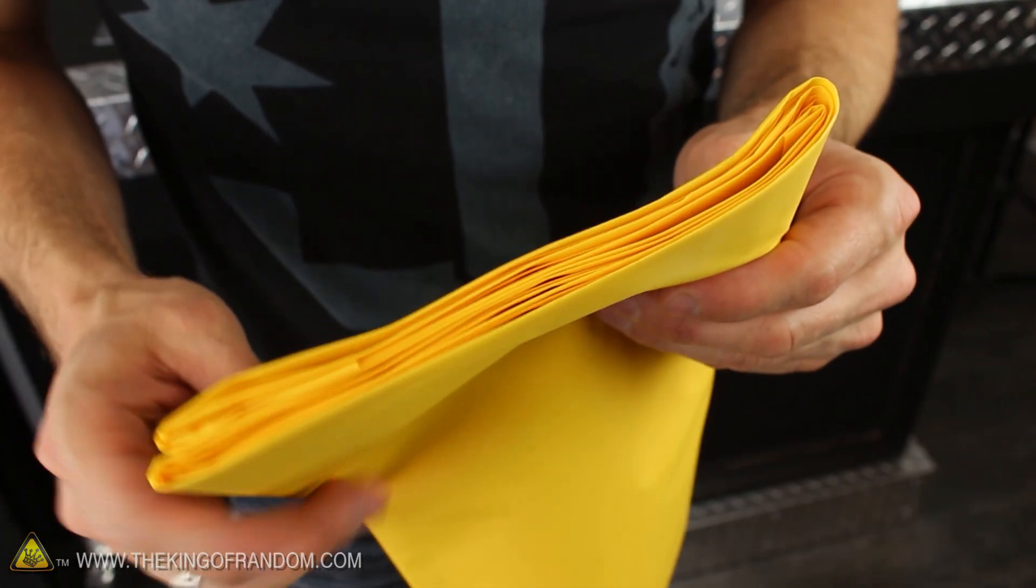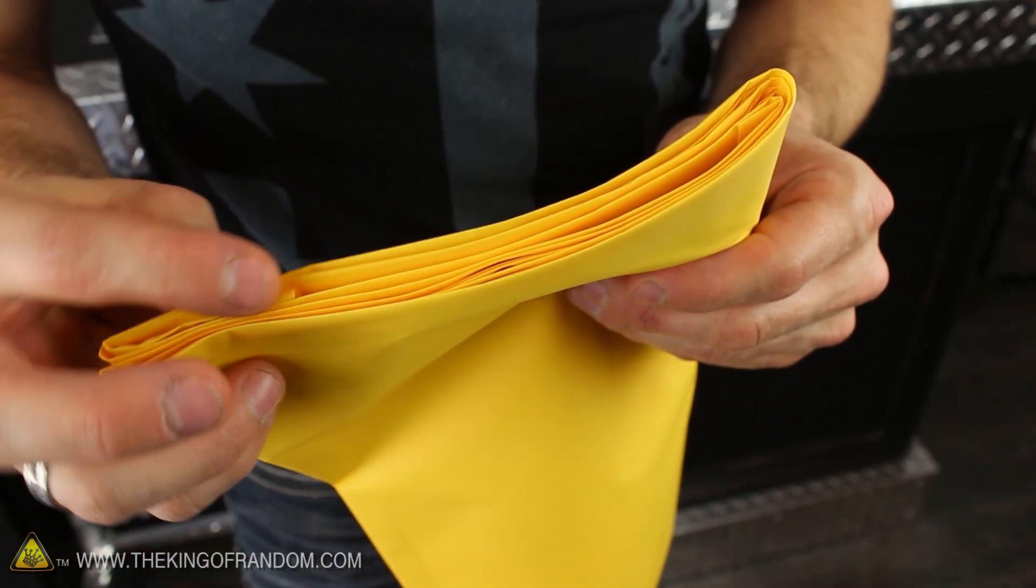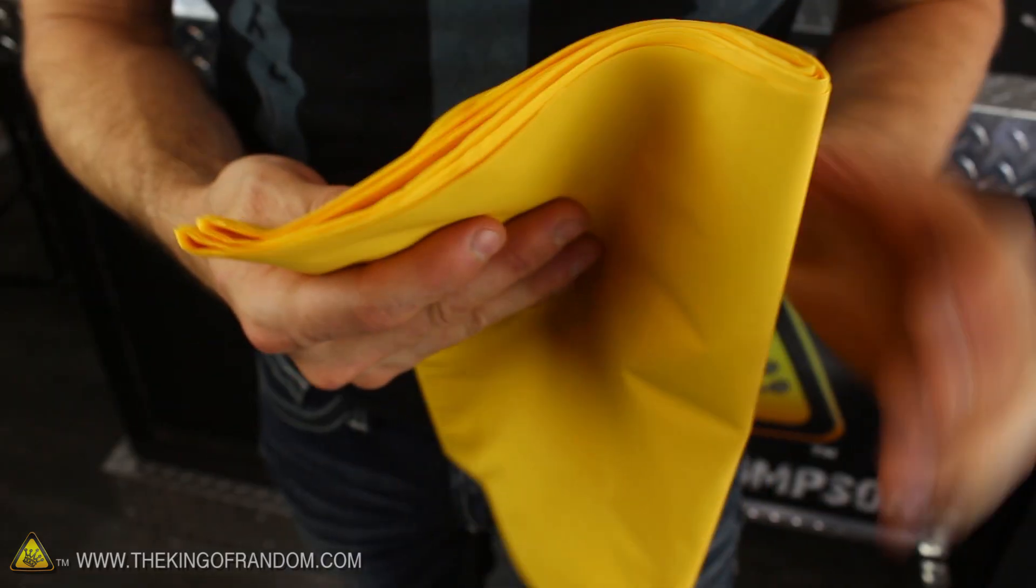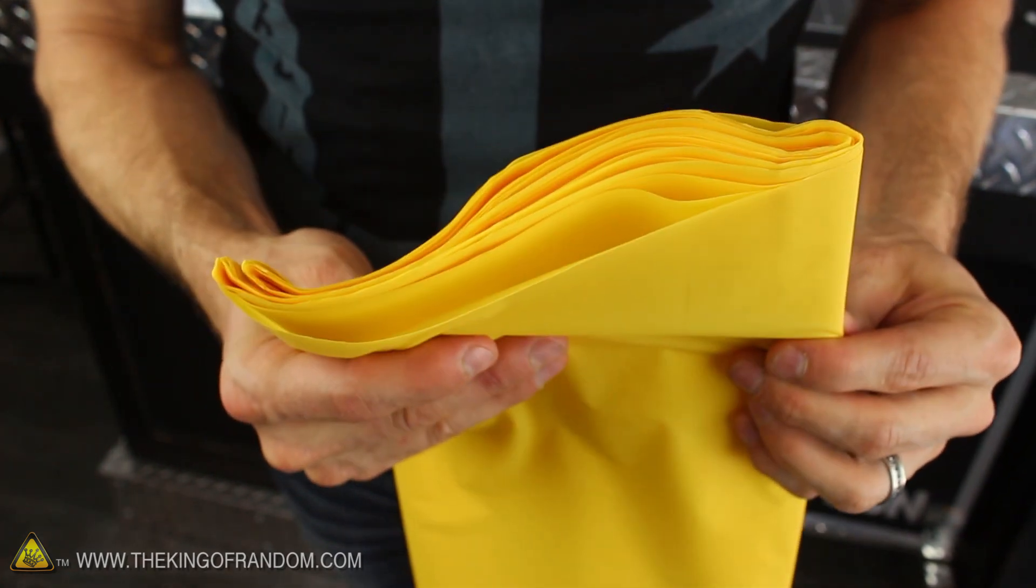If you look closely at the ends, you should see that the material is smooth and folded over on one side, while the other side has all the straight cuts, and it's important to remember which is which.